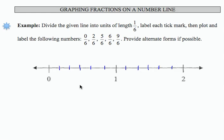Then it says to label each tick mark. So here's one over six, two over six, three over six, four over six, five over six, six, and notice that one is equivalent to six over six.